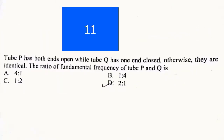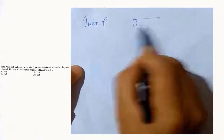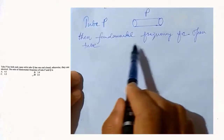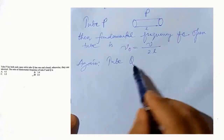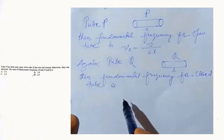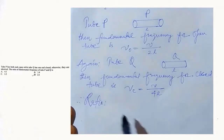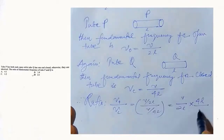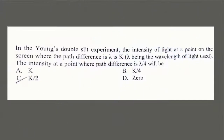Tube P has both ends open while Tube Q has one end closed. We have to find the ratio of the fundamental frequency of Tube P and Q. The fundamental frequency for an open tube (tube P) is v divided by 2L. The fundamental frequency for a closed tube (tube Q) is v divided by 4L, where L is the length of the tube. Therefore, the ratio of open to closed tube fundamental frequency is (v/2L) divided by (v/4L), which gives 2 to 1.